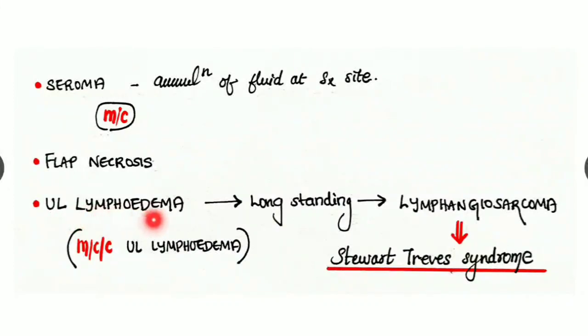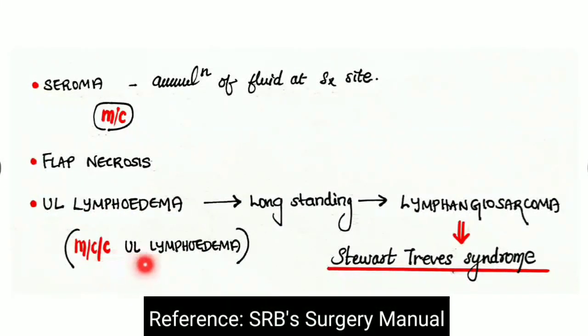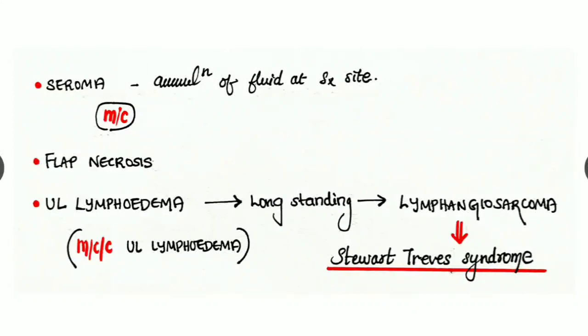And finally, upper limb lymphoedema. Mastectomy is the most common cause for upper limb lymphoedema. If it is long-standing lymphoedema, it may progress to lymphangiosarcoma, and which is known as Stewart-Treves syndrome.